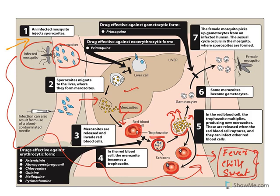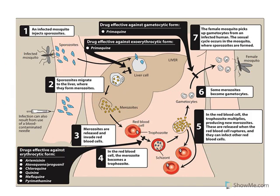After RBC rupture, the parasites may return to the liver or some are converted to gametocytes. The gametocytes are taken up by a mosquito bite, the sexual cycle develops in the mosquito, and it then injects sporozoites into another person. This is the typical life cycle of malaria. The key points are: mosquito bite injects sporozoites into the human host.